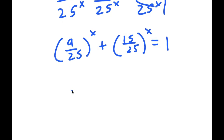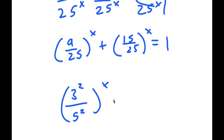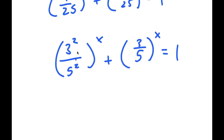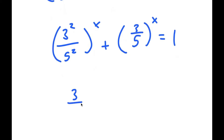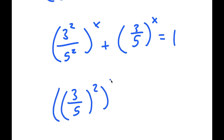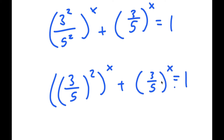Now 9 over 25 I can rewrite as 3 squared over 5 squared, and 15 over 25 is the same thing as 3 over 5. So 3 squared over 5 squared is the same thing as 3 over 5 squared. Now I have that to the power of x plus 3 over 5 to the power of x is equal to 1.